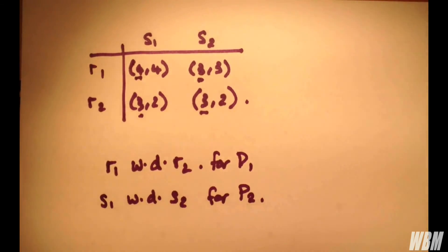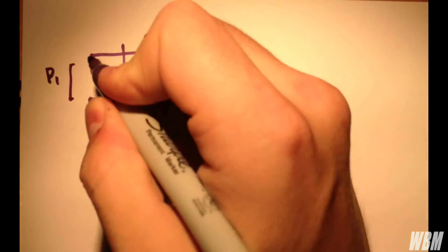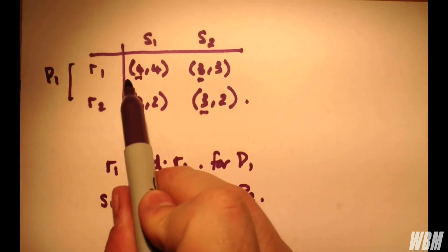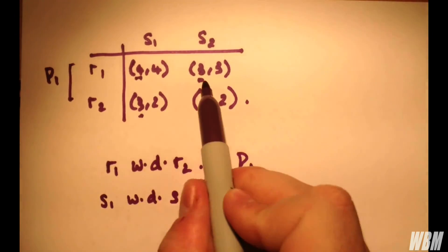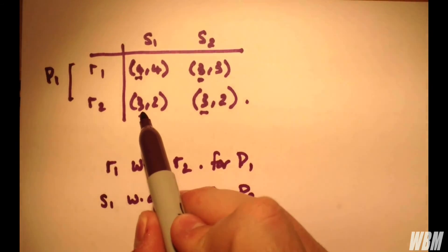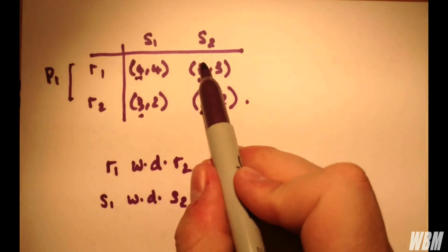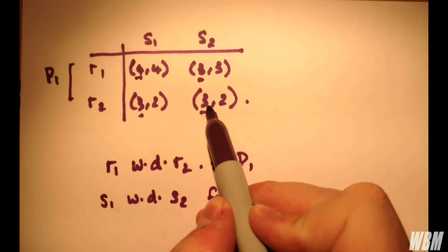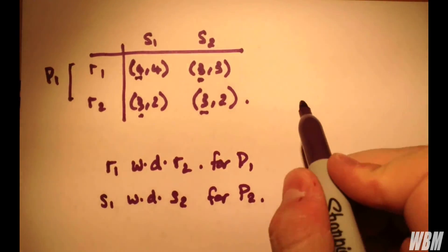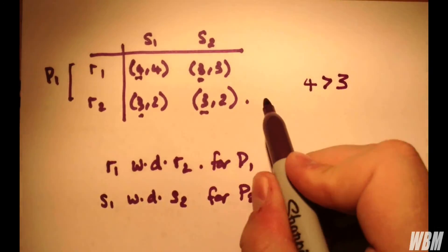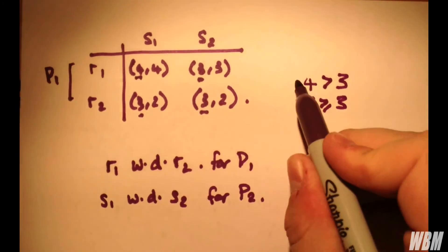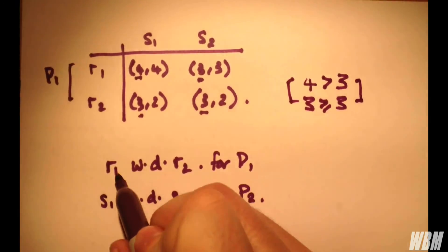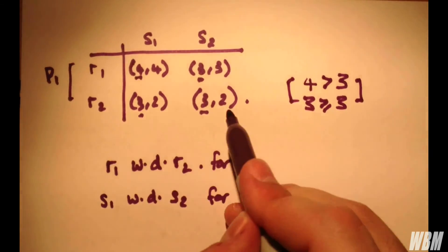So how do we find which dominates which for each player? We have player 1 and his strategies here. For strategy R1, we have 4 for S1 and 3 for S2. Now 4 at S1 is larger than 3 at S1, and 3 at S2 is equal to 3 at S2. So 4 is larger than 3, and 3 is equal to 3 here. That is weak dominance. So R1 weakly dominates R2 for player 1.